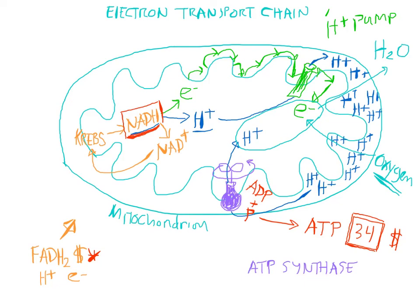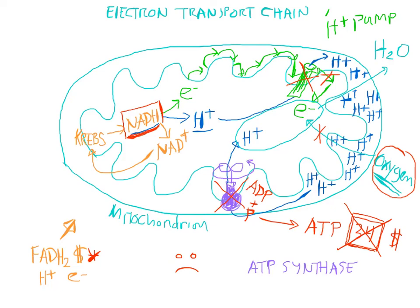Two final thoughts: if an aerobic creature stopped breathing — in other words, if it ran out of oxygen — the electrons would stop moving. And if the electrons stopped moving, the pump would break, no hydrogen ions would be pumped, the ATP machine would stop, and you wouldn't make any ATP, and you would die. This would all happen even if you kept eating food and had plenty of materials for running the Krebs cycle. So keep breathing, and have a good night.